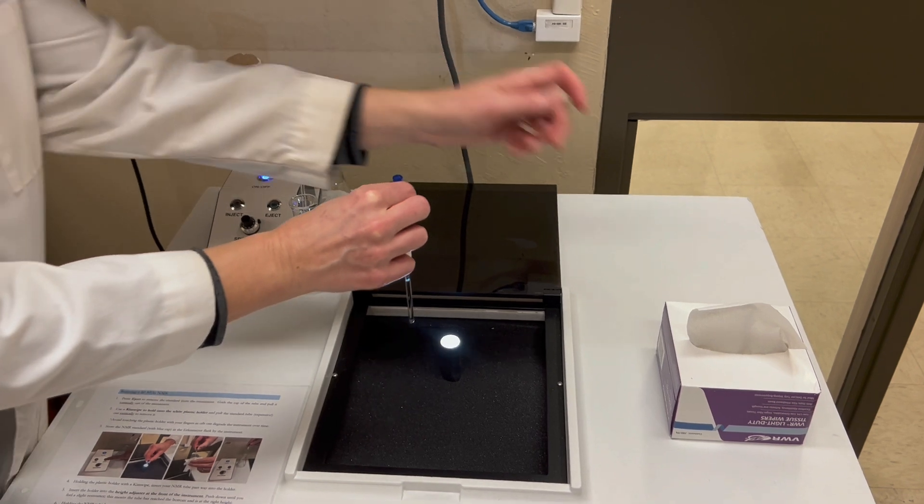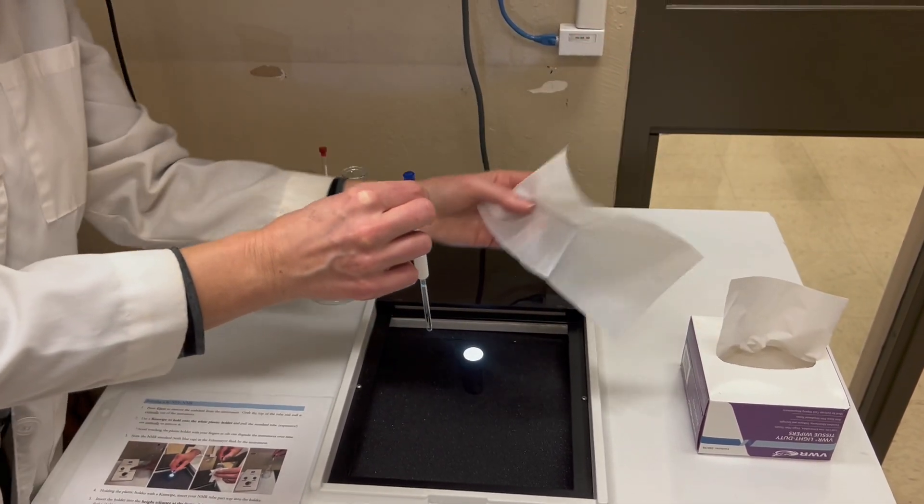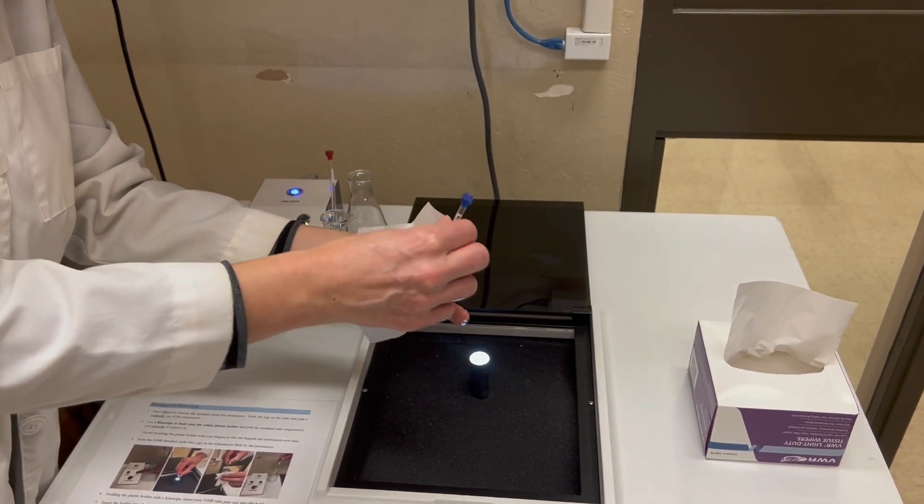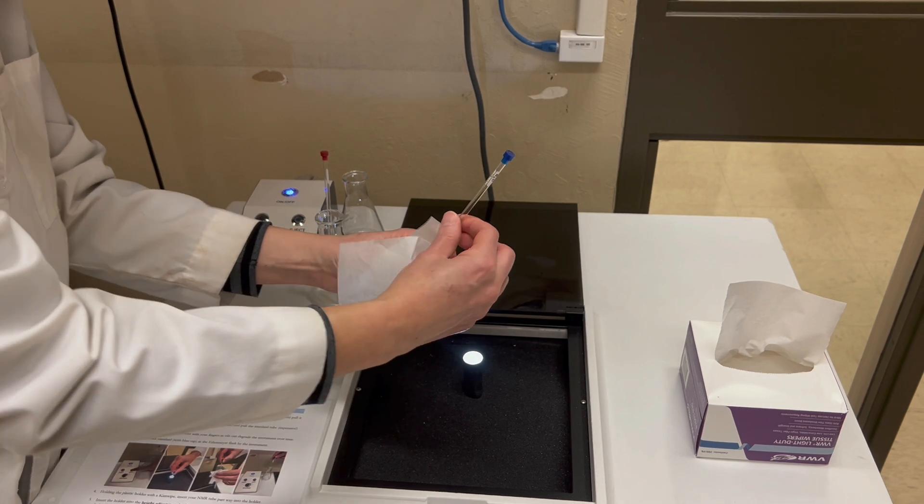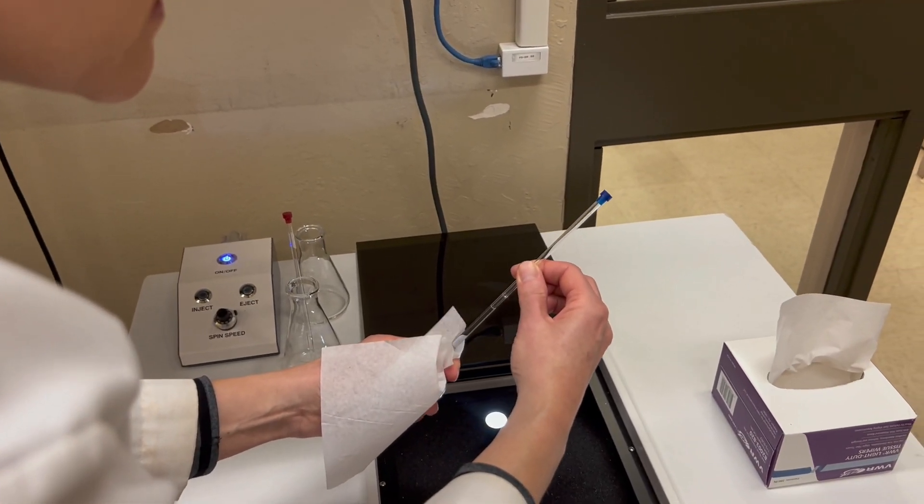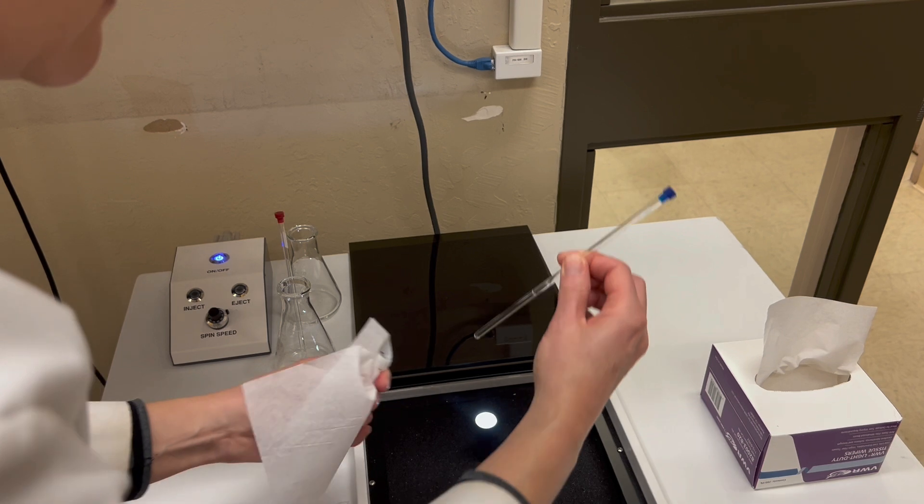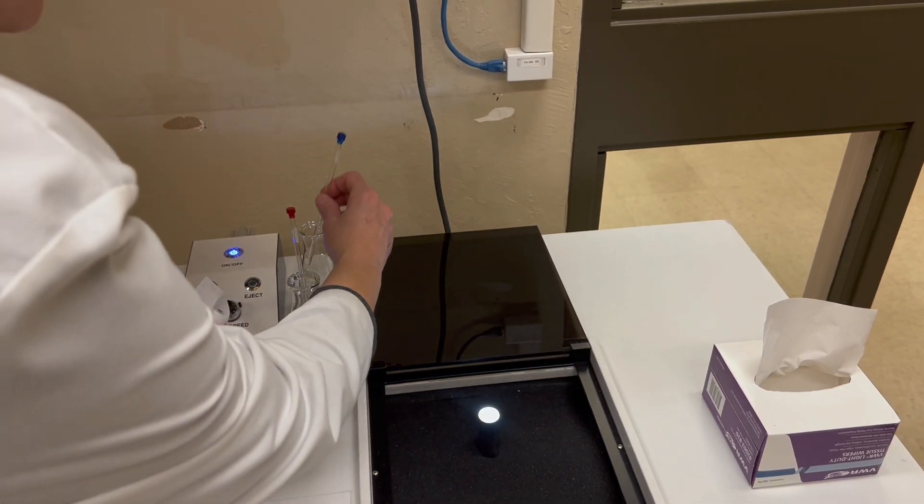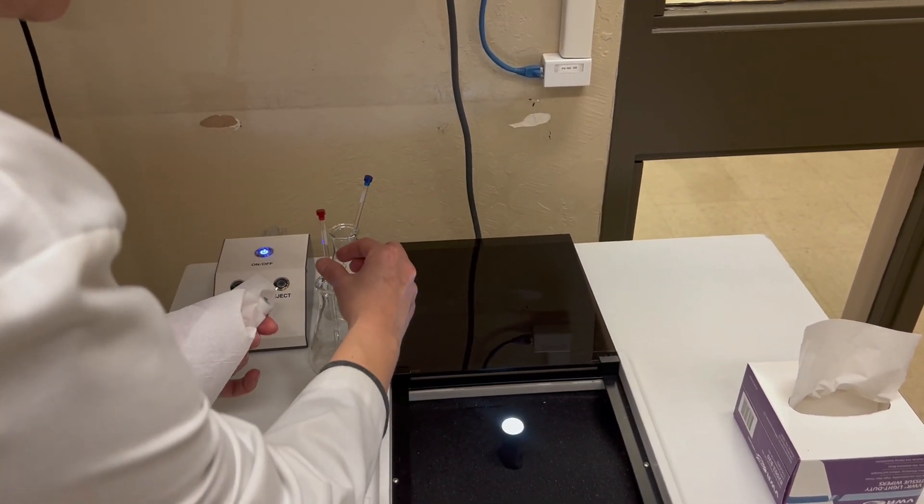Lift that out keeping it very vertical so that you don't snap it. There's this little plastic holder that will hold the sample. If we grab that with our fingers we'll get oils from our hands onto that spinner, which over time will cause us some problems. So let's hold onto that with a kimwipe.